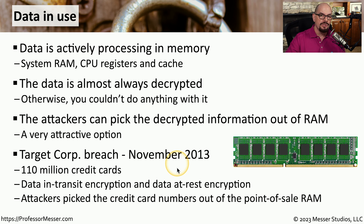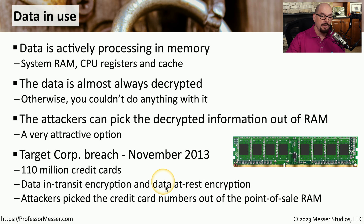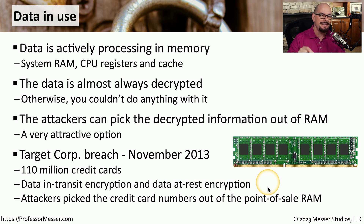Target was using encryption for all data in transit, and they were also encrypting all data at rest. But since the attackers were focusing on data in use, they were able to gain access to these credit card numbers without any encryption being in effect.